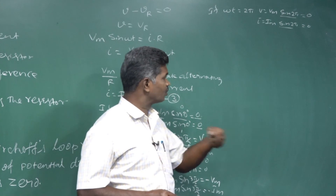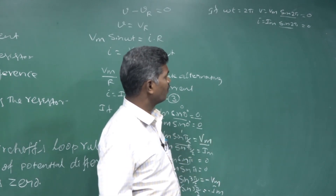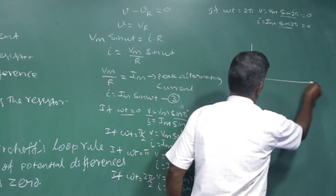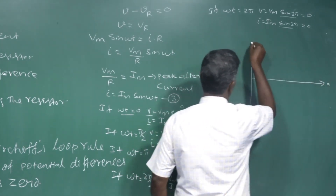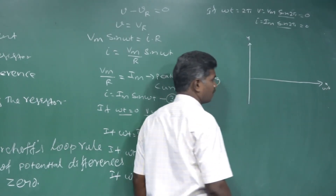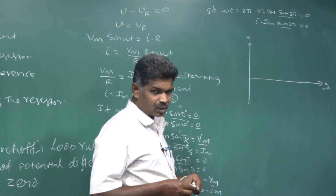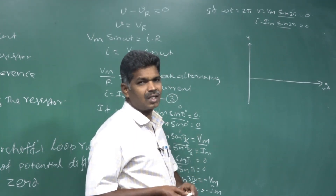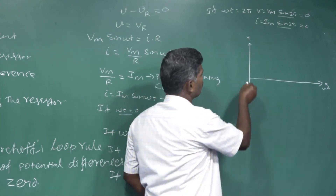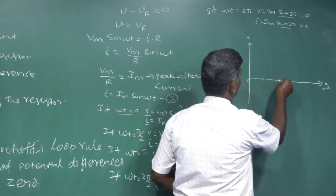We are going to draw the waveform diagram based on these values. The x-axis represents ωt, the independent factor (angular rotation), based on which we get both potential difference and current. The values on the x-axis go from origin zero, divided equally as 0, π/2, π, 3π/2, and 2π.